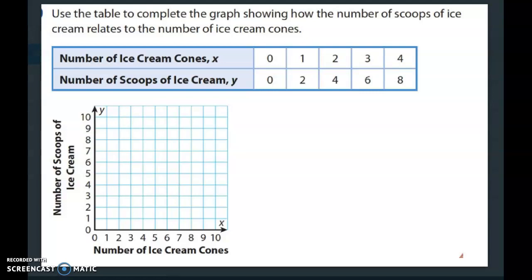So obviously zero ice cream cones is zero scoops. One ice cream cone, they have two scoops. Two ice cream cones, they have four scoops. So it looks like it's doubling every single time. So what we're going to do is we're going to plot these on our coordinate plane.